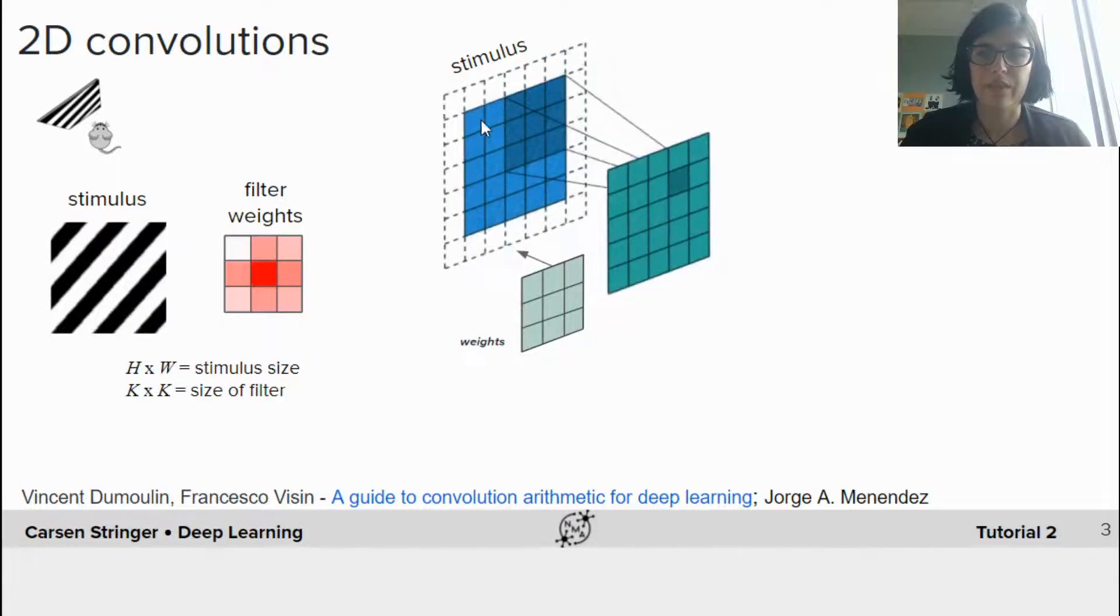And so here's an animation of this procedure. So you can see the weights in gray sliding across the stimulus in blue, creating this output in green. And so at each of these positions, the filter is multiplied by the stimulus in that box and added together to create the output, which is each one of these boxes here.